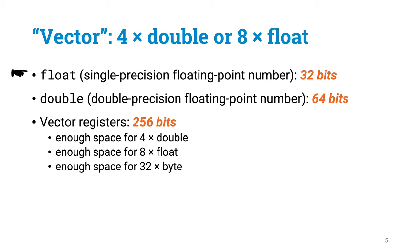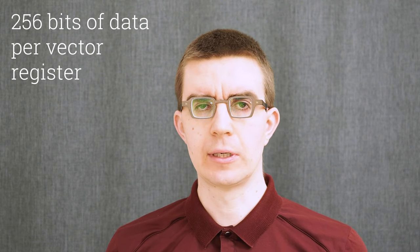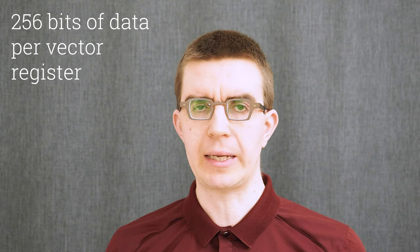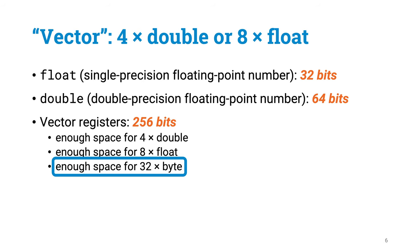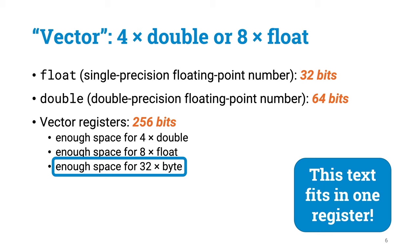A single precision floating-point number is 32 bits long, and a double precision floating-point number is 64 bits long. So one 256-bit vector register is large enough to hold, for example, four double precision floating-point numbers or eight single precision floating-point numbers. But you can use the large capacity of vector registers also in many other creative ways. You can store, for example, 32 bytes of data in one such register. Here is a piece of text that is 31 characters long, so you can actually store the entire sentence in one vector register.